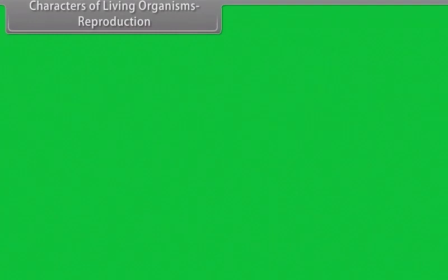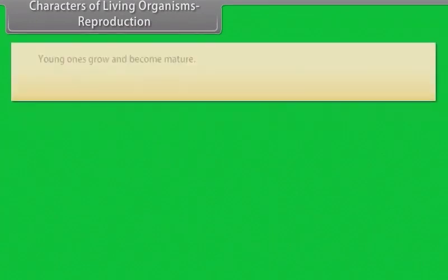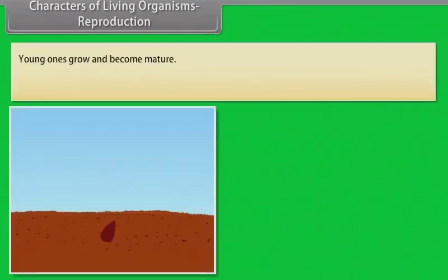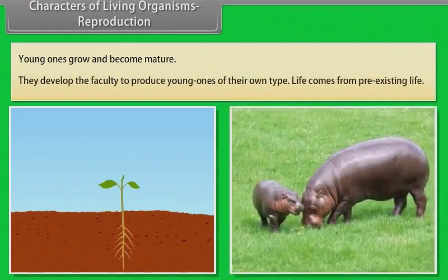Young ones grow and become mature, and they develop the faculty to produce young ones of their own type. Life comes from pre-existing life.